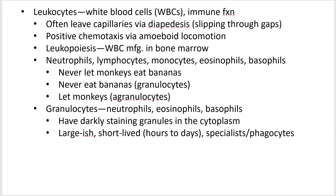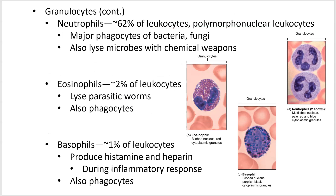Here are the granulocytes with images: neutrophils, eosinophils, and basophils. Neutrophils are the most common at roughly 62%. They're also called polymorphonuclear leukocytes because their nuclei have many shapes — 'polymorph' meaning many shapes of the nucleus.